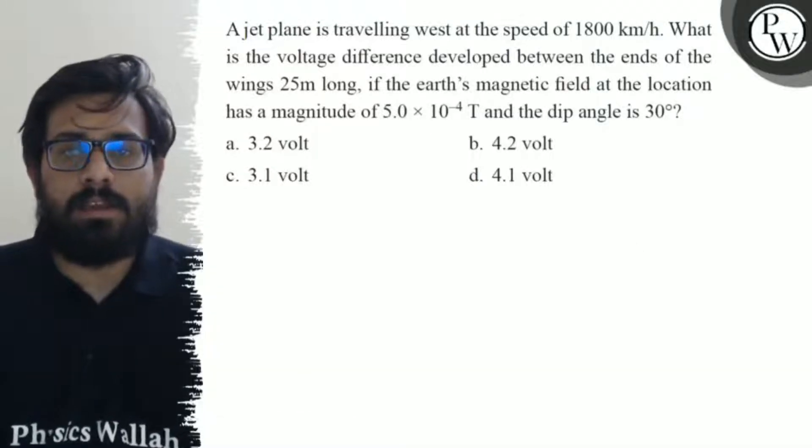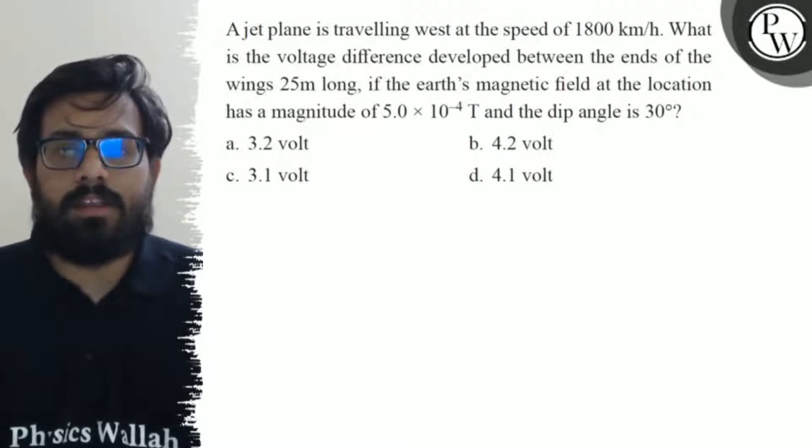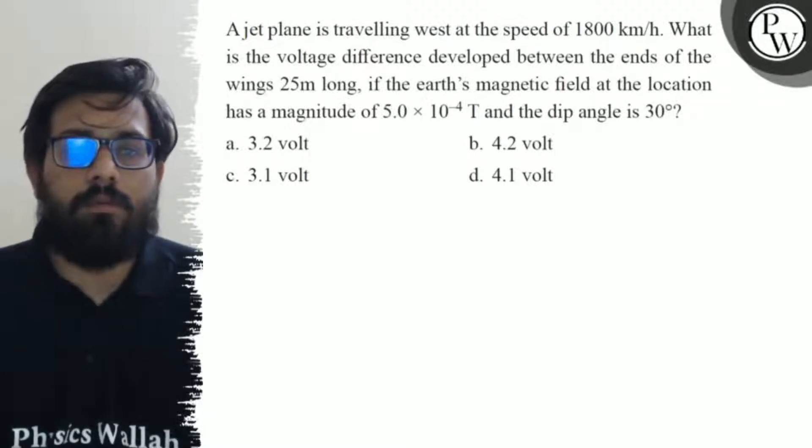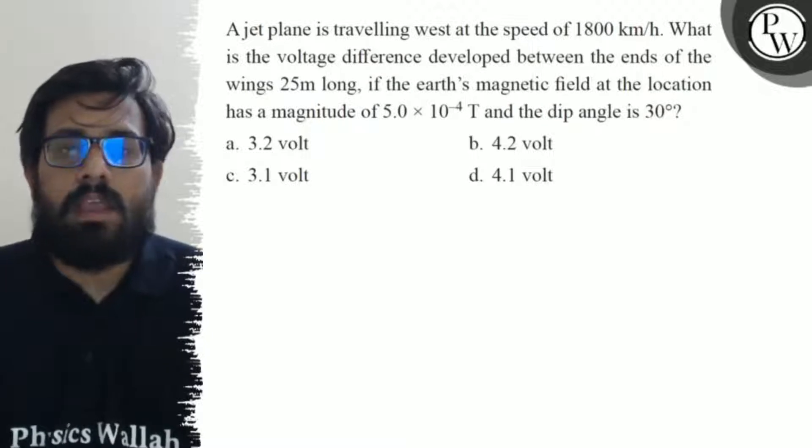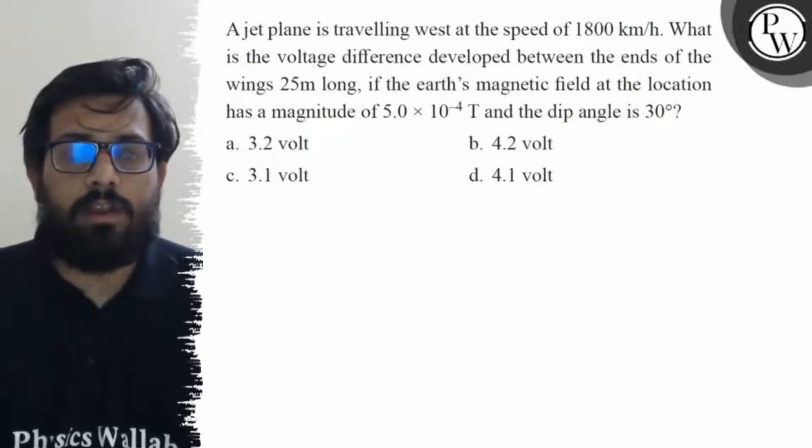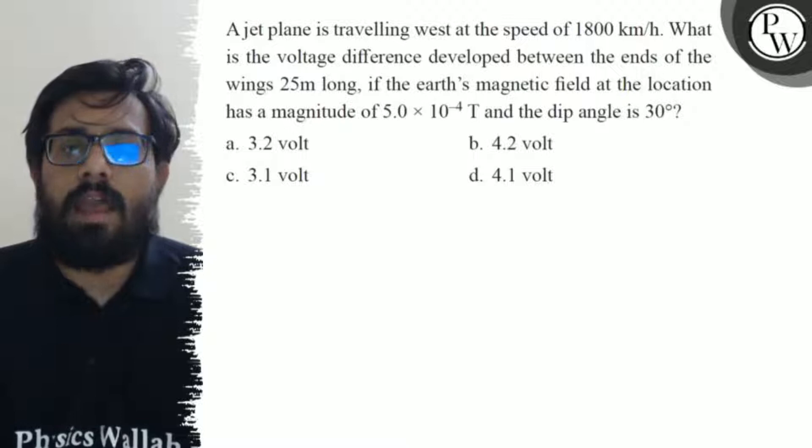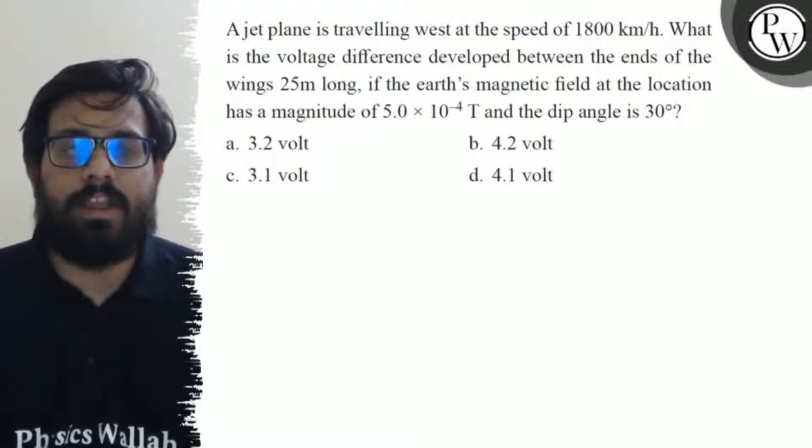A jet plane is traveling west at a speed of 1800 km per hour. What is the voltage difference developed between the ends of the wing, 45 meter long? If the earth's magnetic field at the location has a magnitude of 5 into 10 to the minus 4 Tesla and the dip angle is 30 degree.